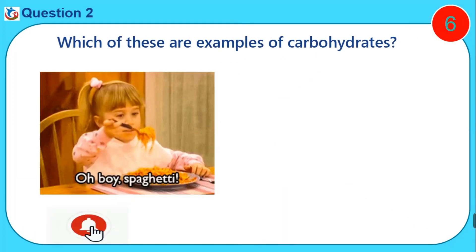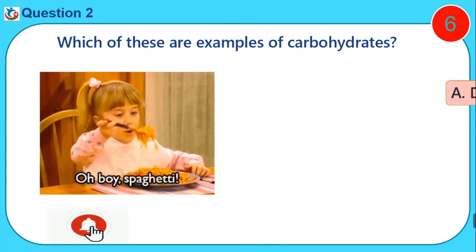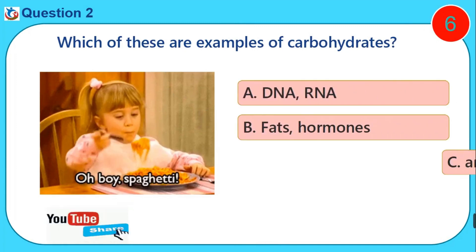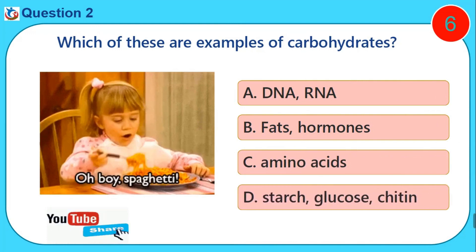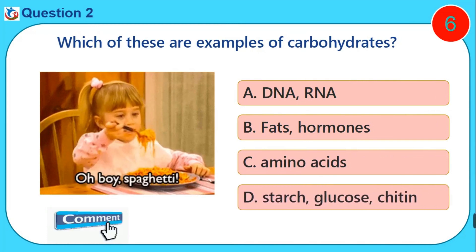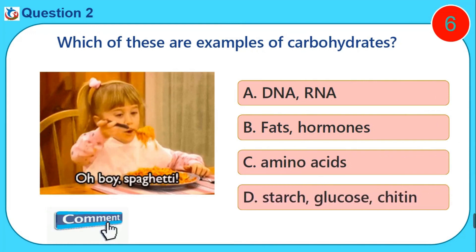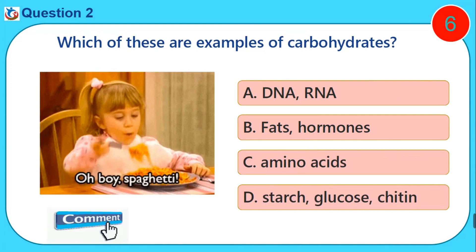Which of these are examples of carbohydrates? A. DNA, RNA. B. Fat, hormones. C. Amino acids. D. Starch, glucose, chitin.